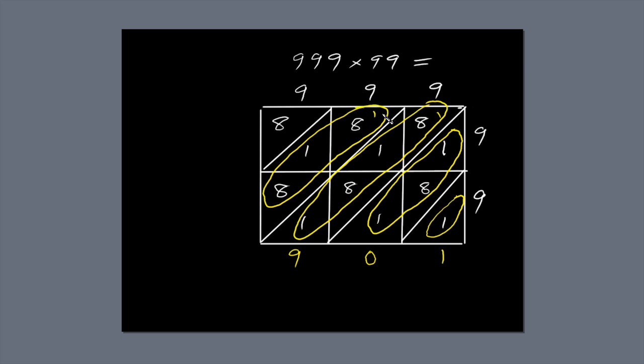Again, 1 plus 8 plus 1 is 10, plus 8 is 18. Write the 8 next to the diagonal and carry the 1 over to the next diagonal.